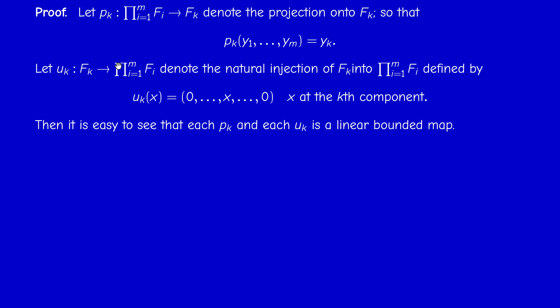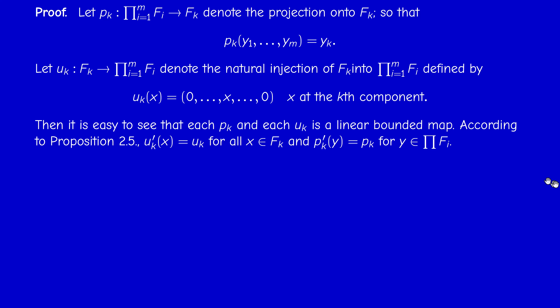We can equip the product space with the maximum norm or any other equivalent norm — it doesn't change the Fréchet differentiability. Since all P_K and U_K are linear bounded maps, according to Proposition 2.5 the derivative of U_K at any point X is just U_K itself — it's constant — and the same holds for P_K prime.